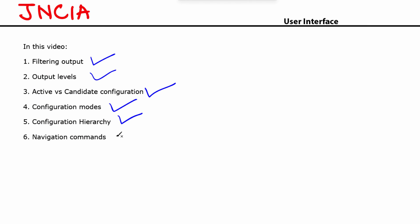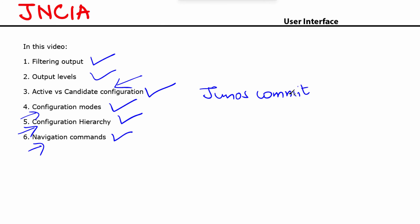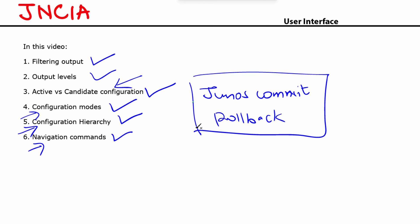So we discussed navigation commands as well. In this video we covered lots of interesting topics: filtering output, different output levels, differences between active and candidate configuration, the configuration modes, how to move into specific configuration hierarchies, and finally some navigation commands. In the next video we're going to continue to focus on the Junos user interface — we'll take a look at the Junos commit model and the rollback model. Thank you for watching, and I'm excited to see you there.